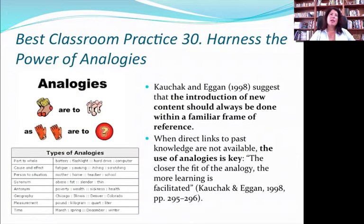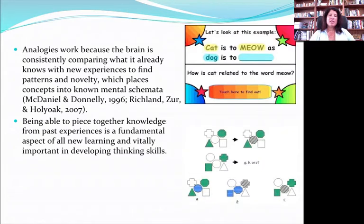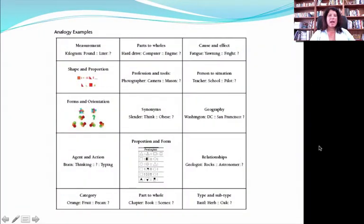Analogies are really key because the brain always has to compare new knowledge with past experiences. So when you don't know something, the best way to help explain it is through an analogy — it's a way of introducing content knowledge in a context they might be more familiar with. The closer the fit of the analogy, the more the learning is facilitated, according to Kachik and Negan. It's very much based on the idea that the brain is always comparing what it already knows with what it could know — filling in the gaps of information that might exist. Analogies can be based on words, shapes, forms, patterns, comparing parts to wholes, cause and effect, person to situations, or geography. By using analogies, you're actually strengthening and helping students develop their own thought process.